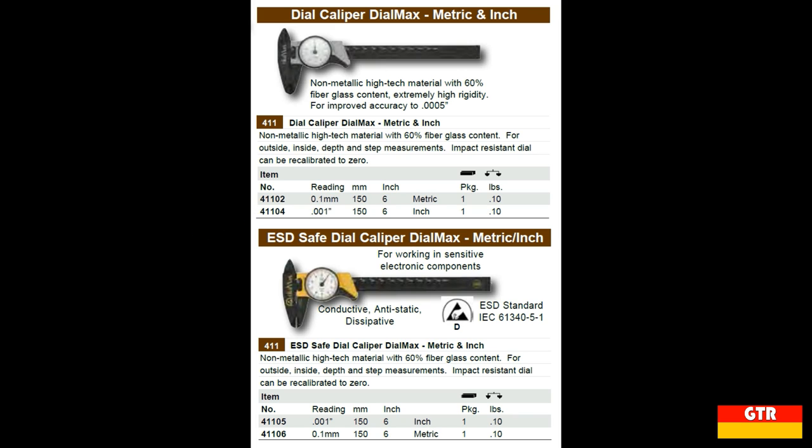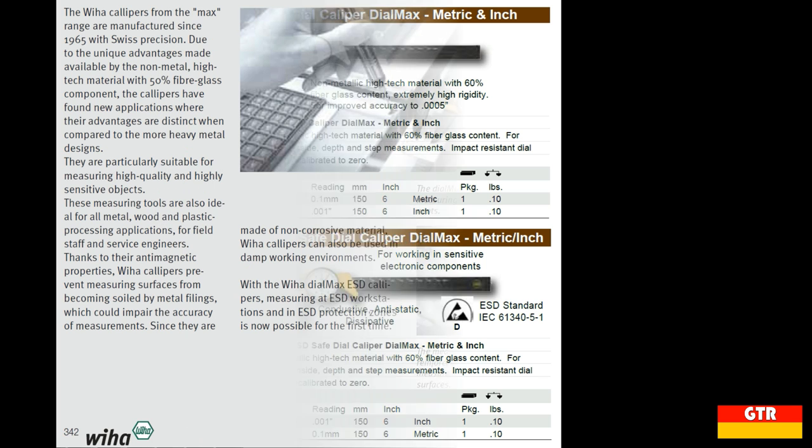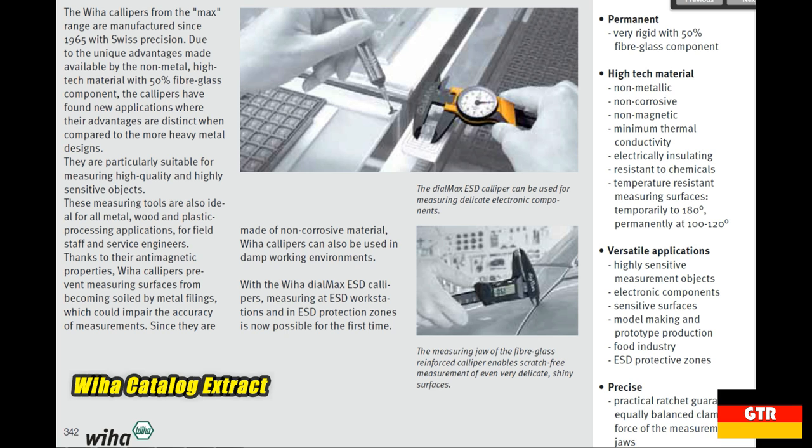WIHA does offer an ESD safe version of these calipers that will run you about $20 more. The part numbers for the ESD safe metric and SAE versions are 41105 and 41106 respectively. Normally you would see the jaws of a caliper made of hardened stainless steel alloy. These particular calipers are plastic reinforced with 50% glass fiber. No information on which type of plastic was used, but I suspect that it would be either a nylon or polypropylene blend for durability and chemical resistance.